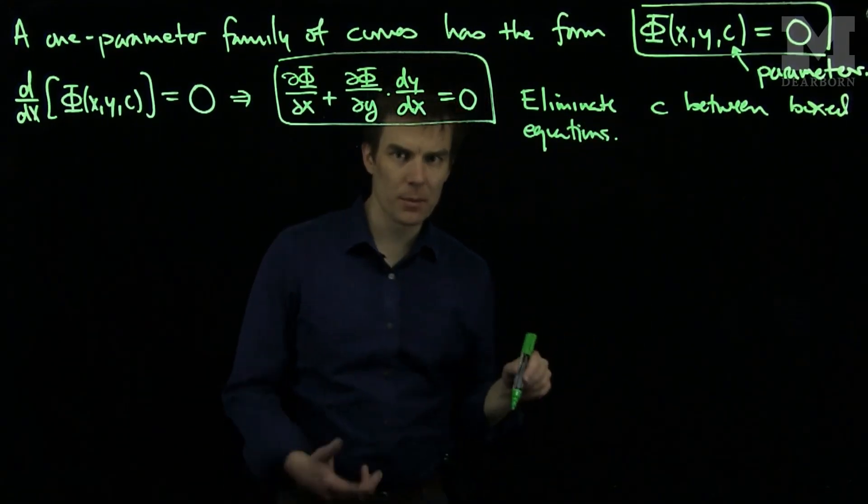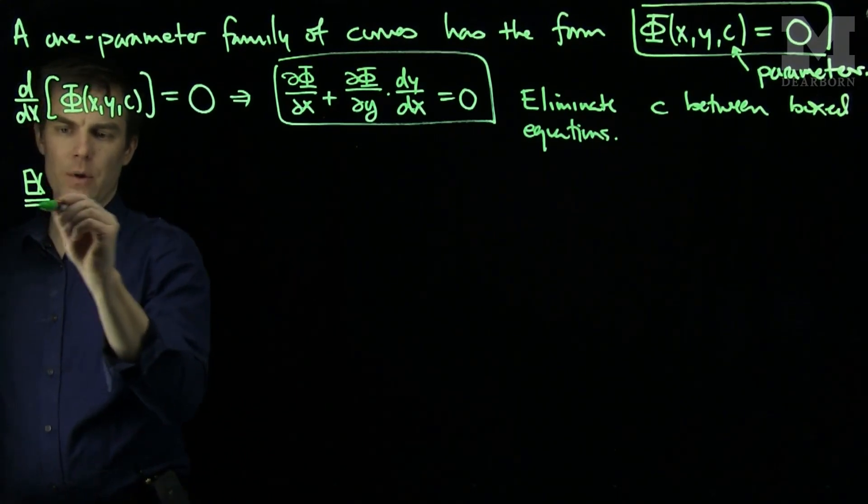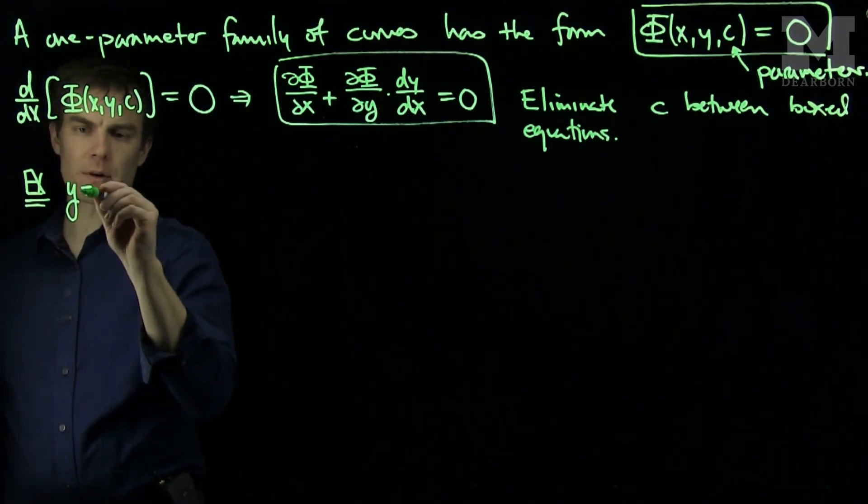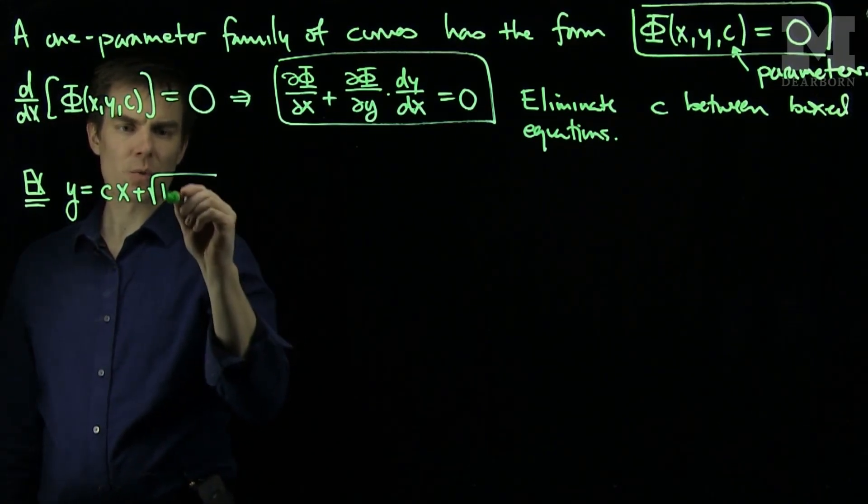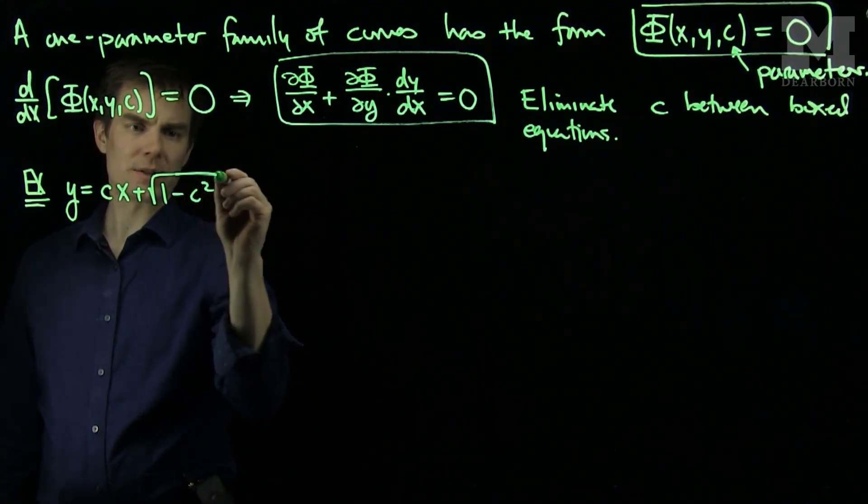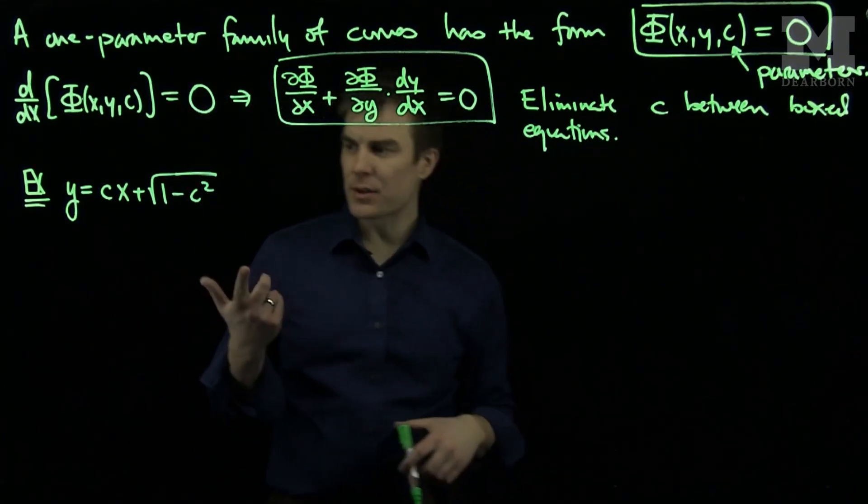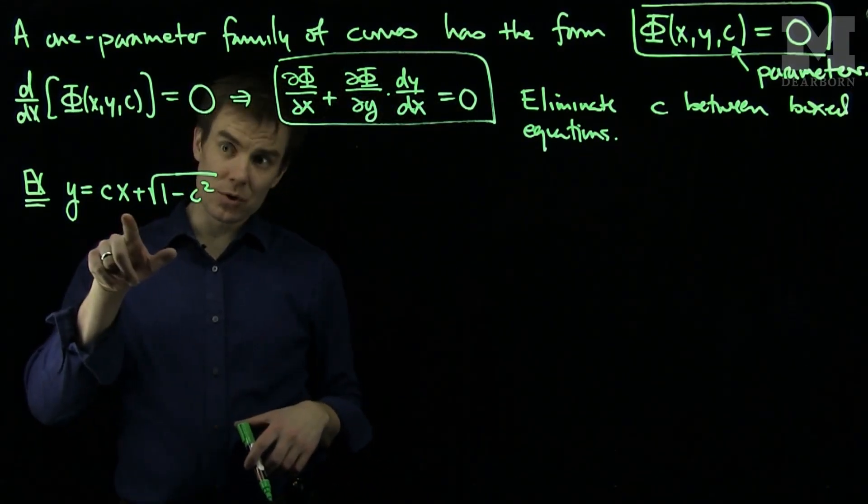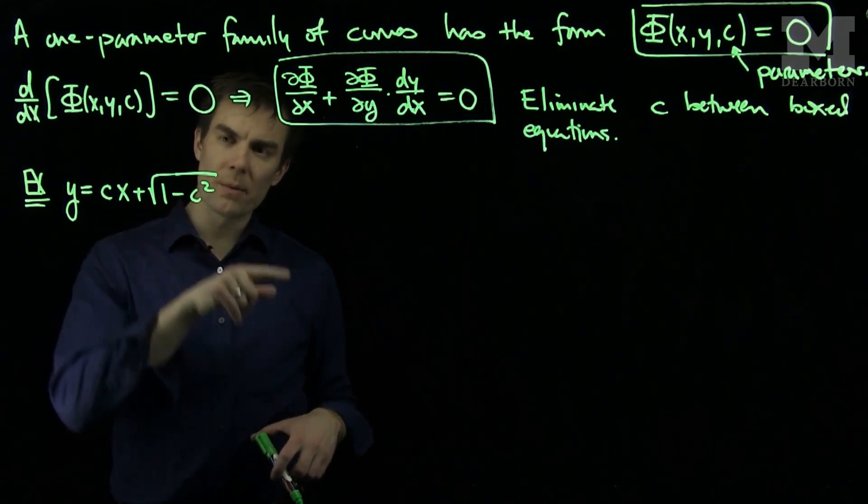Let's see a couple examples. I will consider the one-parameter family of curves y = cx + √(1 - c²). These curves are straight lines whose slope is c and whose y-intercept is √(1 - c²).